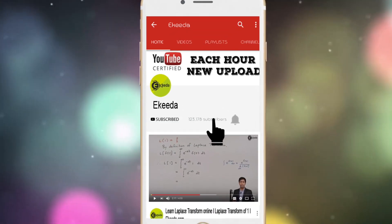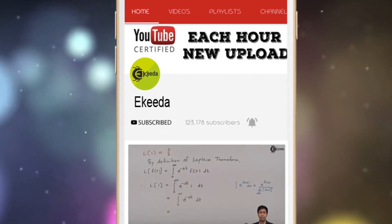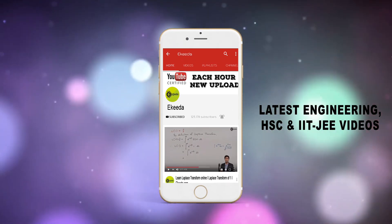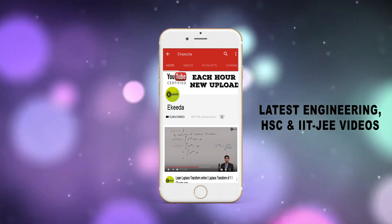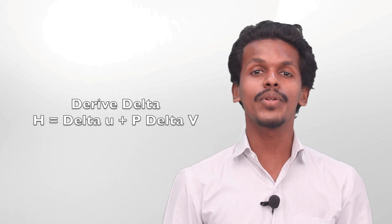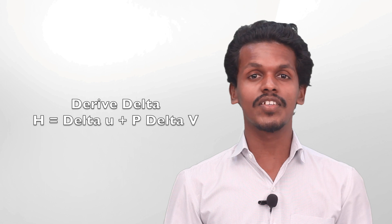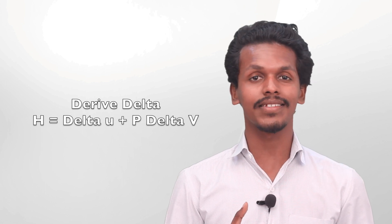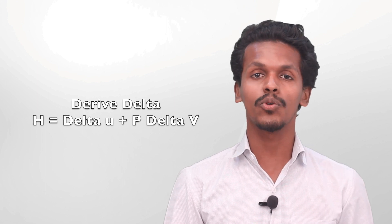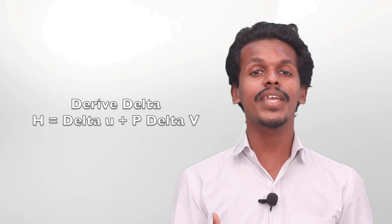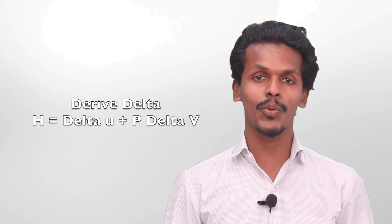Do subscribe to Ekeeda channel and press the bell icon to get updates about the latest engineering, HSE, and IIT JEE Mains and Advanced videos. Hello friends, now we are going to derive an equation based on change in enthalpy, that is delta H equals delta U plus P delta V. So how can we derive this equation?